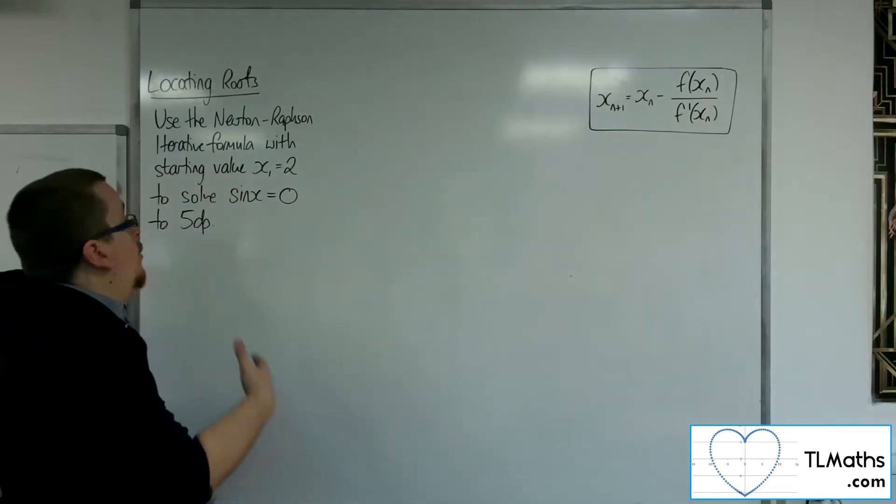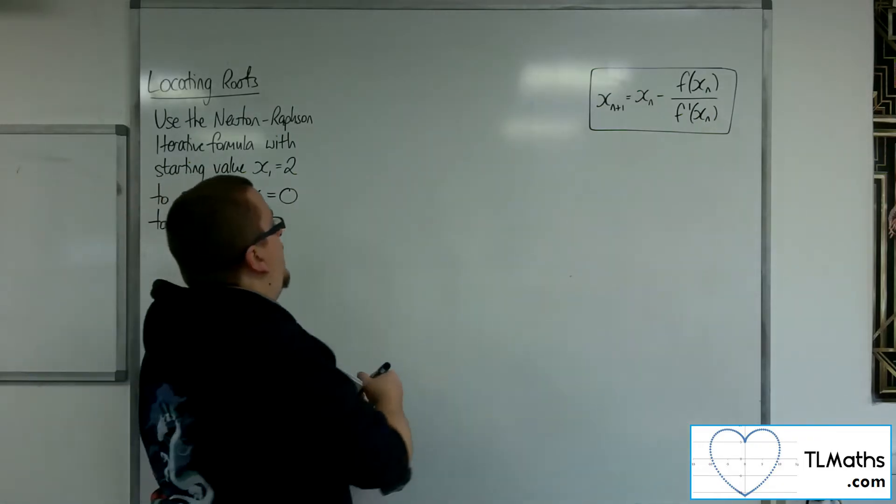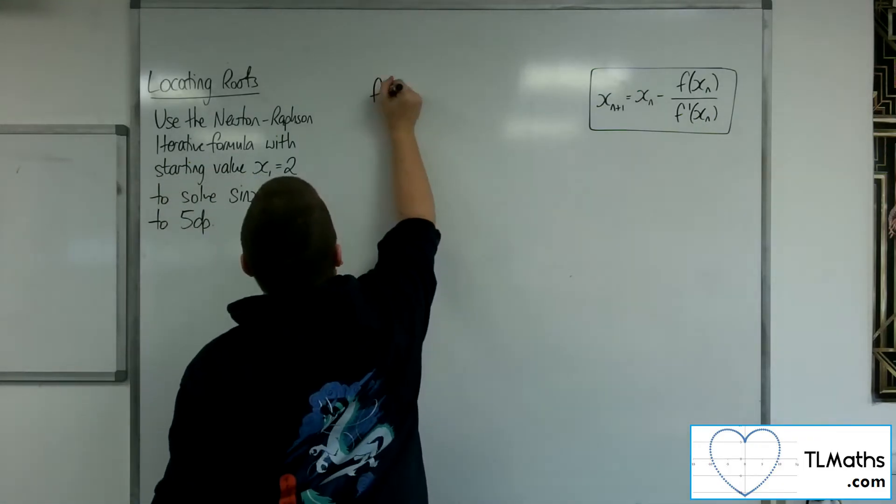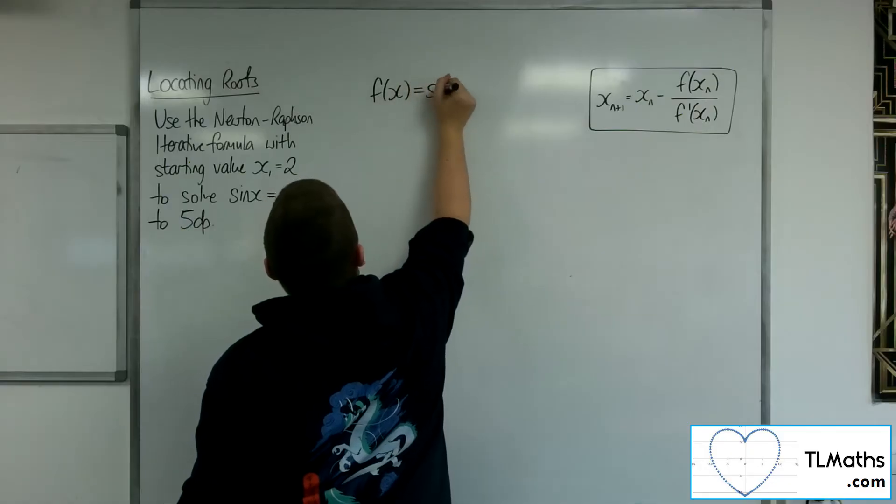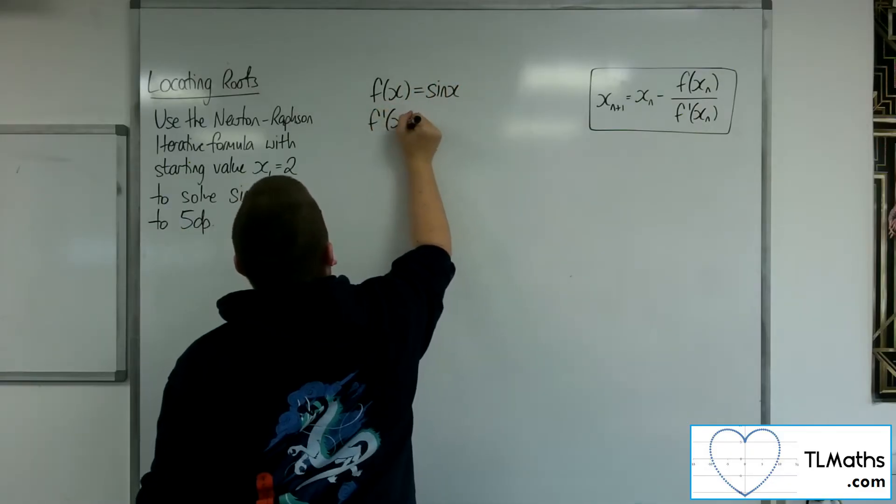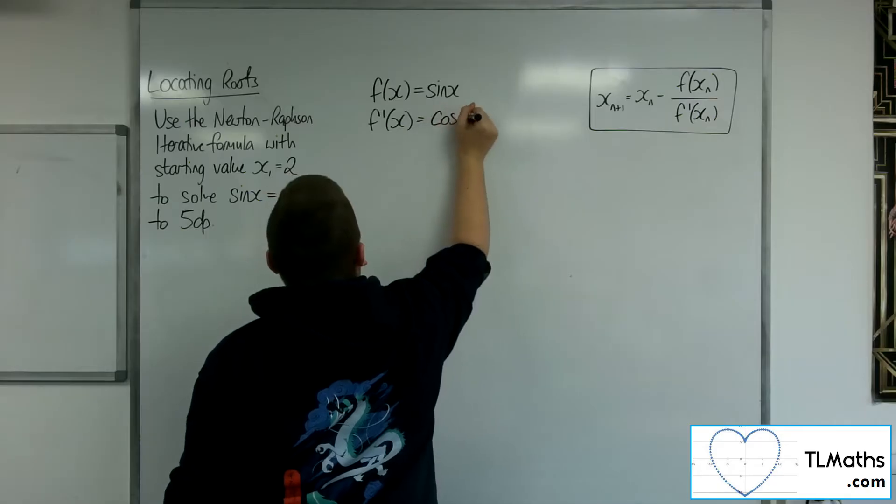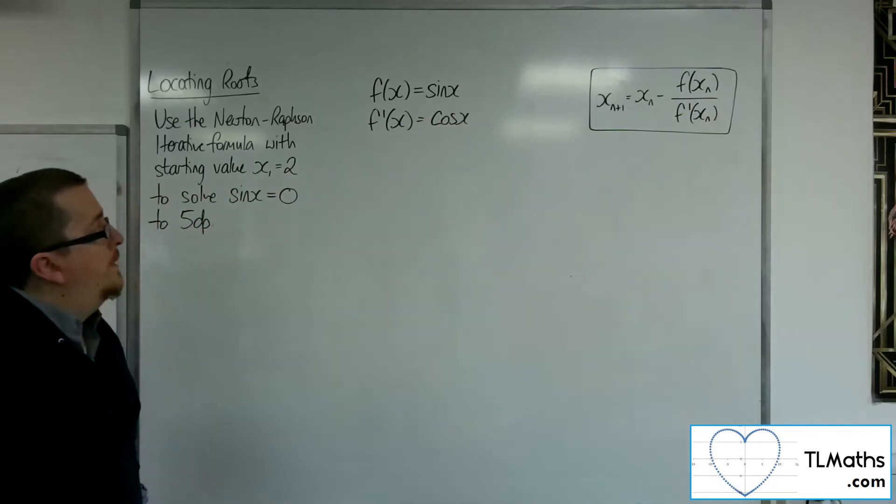OK, so f of x in this case is sine x. So f prime is cosine of x.